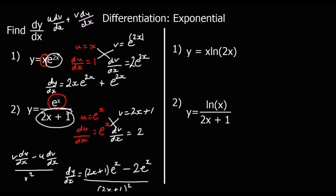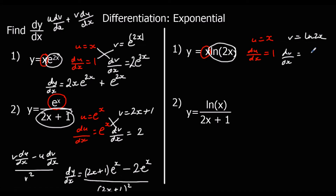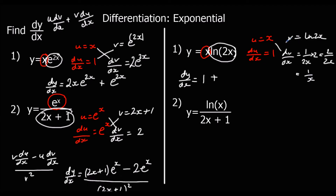Now the ln functions. The first is a product rule question — two functions multiplied together. Let u equals x, so du/dx is 1. And v equals ln(2x), so dv/dx is 1 over 2x multiplied by the bracket differentiated, which is 2. That gives 2 over 2x, which simplifies to 1 over x. Applying the product rule: u·dv/dx is x times 1/x, which equals 1. Plus v·du/dx: 1 times ln(2x) is ln(2x). So dy/dx equals 1 plus ln(2x).